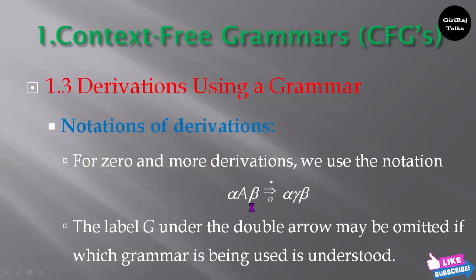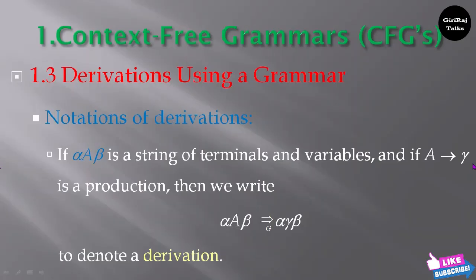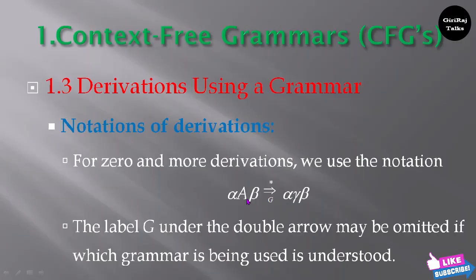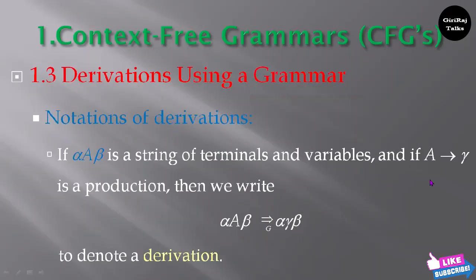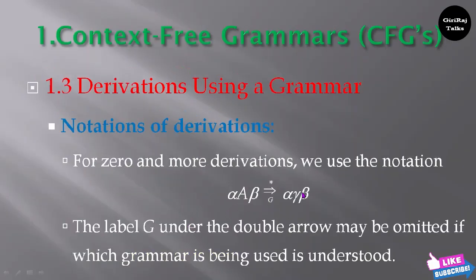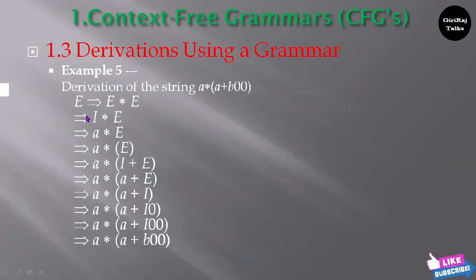In the previous example, A → gamma means in place of A you can substitute gamma. The label G under the double arrow may be omitted if which grammar is being used is understood. Now let us see an example: derivation of the string a star of a plus b zero zero — how can we derive this string using those productions?